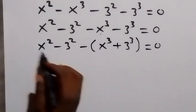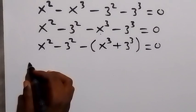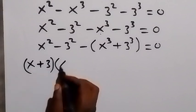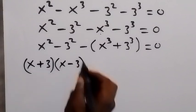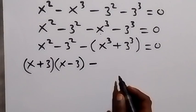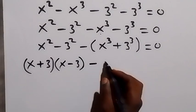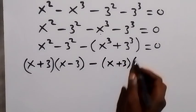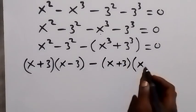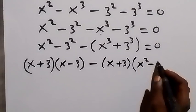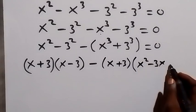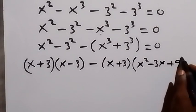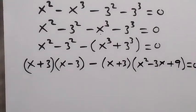Now we make use of algebraic identities. Here we have difference of two squares, so we can factor it as (x + 3)(x − 3). Then for the sum of two cubes, we can factor it as (x + 3) multiplied by x squared minus 3x plus 3 squared, and 3 squared is 9, which equals 0.